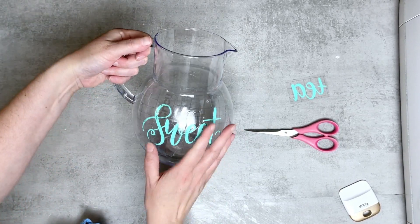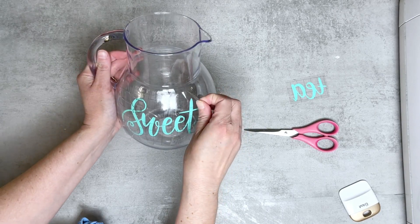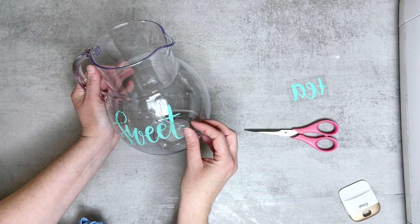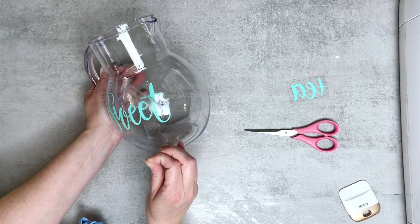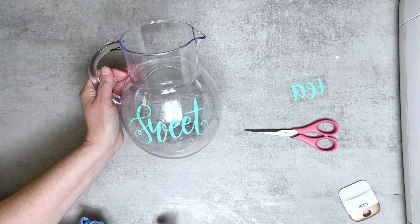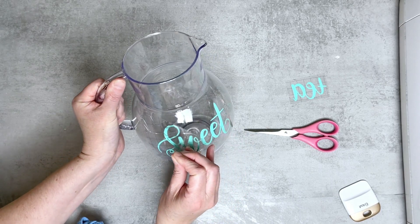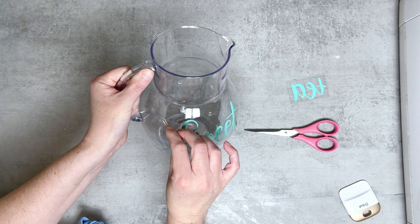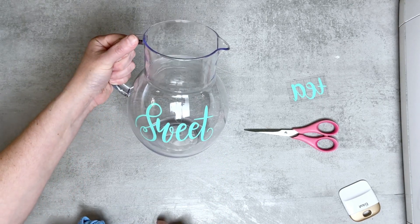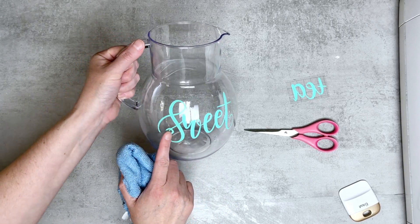When you feel pretty confident that it's applied well we can take a corner of the section here and just start peeling this down and remember if you are noticing that it's not adhered completely you can always place the transfer tape back down and work on it some more. This is going to come off in pieces because we cut little slits in the transfer tape. It's pretty standard that it just kind of peels off in small sections.